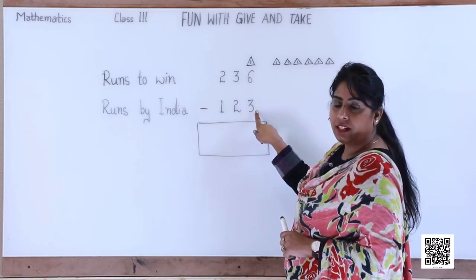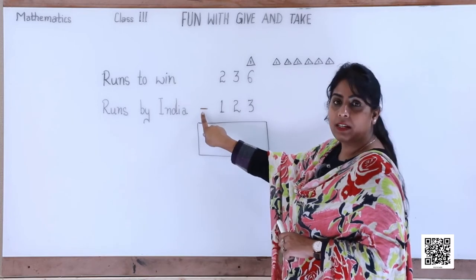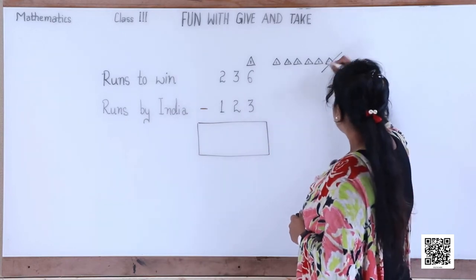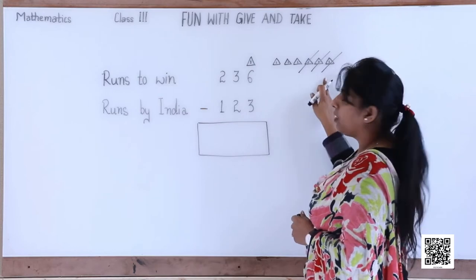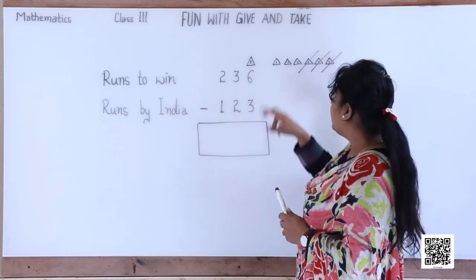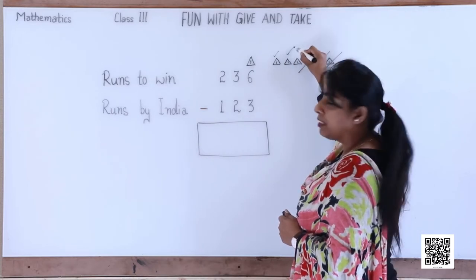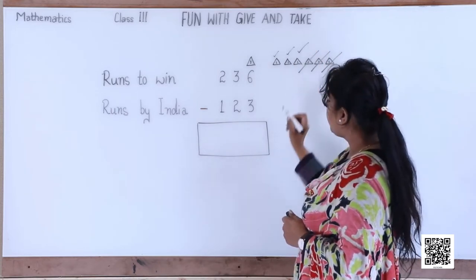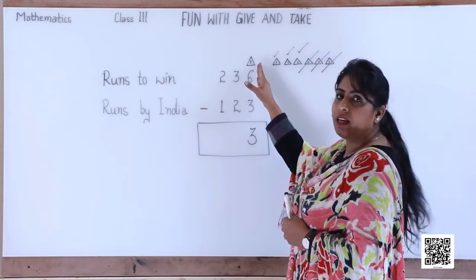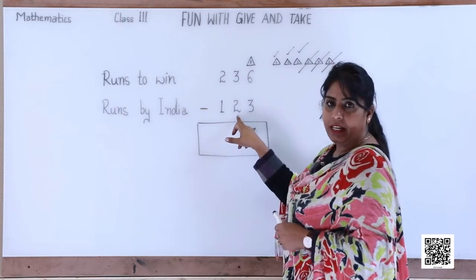In the ones line we have six triangles — first, second, third, fourth, fifth and sixth — and underneath we have three. We are going to subtract, which means we have to cancel three of these. First, second and third — all three have been cancelled. How many triangles are left? Yes, three triangles. So we write three as the answer in the ones place.